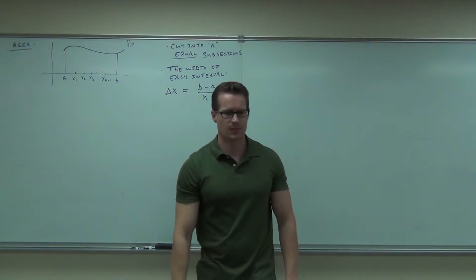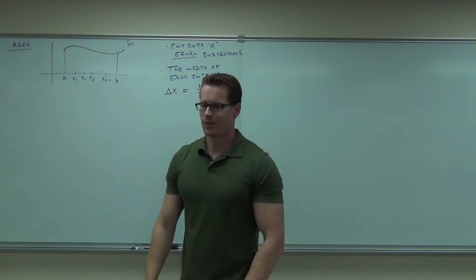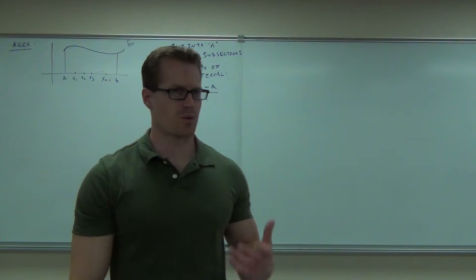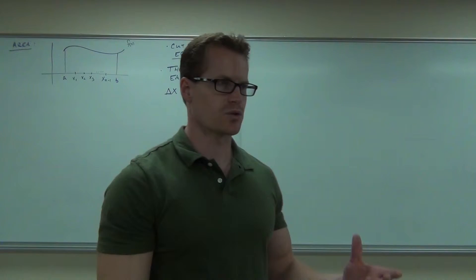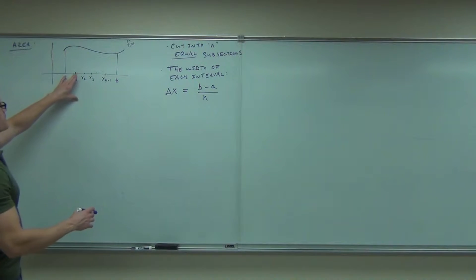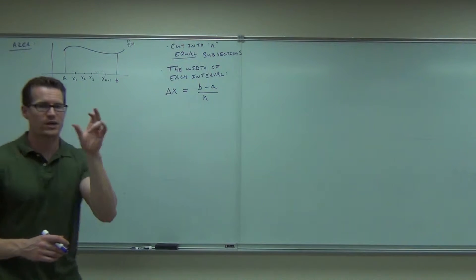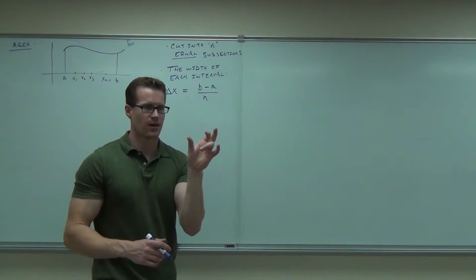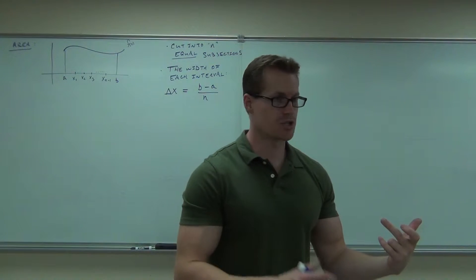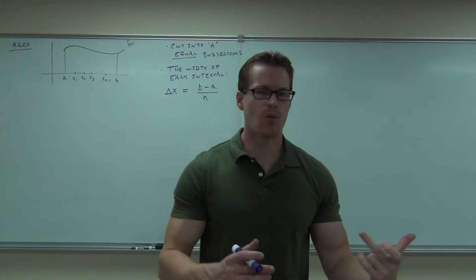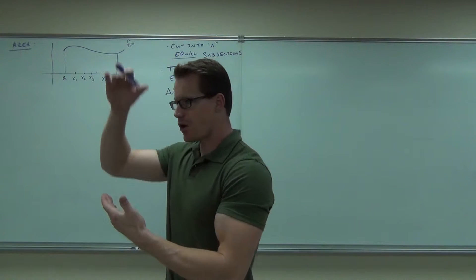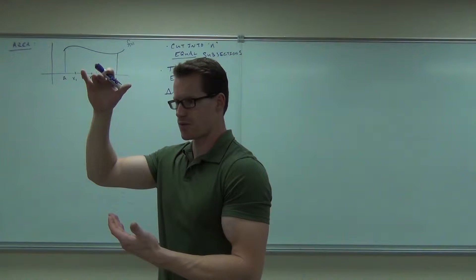Now here's the idea. We're going to make some rectangles. We already have the bases of our rectangles — this one, this one, this one, and this one — and they're all equal. That's going to make them very easy to add together later, which is nice. But what we've got to do is find out how tall our rectangles are, how high they are.